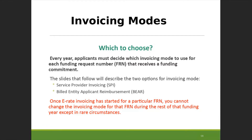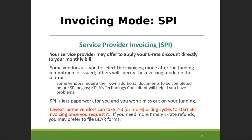The first option is service provider invoicing, or SPI. This is where your service provider applies the e-rate discounts to your invoice up front and then bills you the difference. For example, with a 90% discount on internet, you would pay 10% of the eligible cost plus any ineligible fees. This puts the paperwork burden on the service provider, because they file their own invoicing forms with USAC to be reimbursed for the discounts they applied to you.